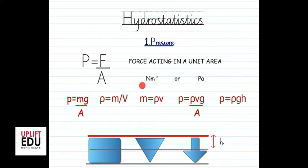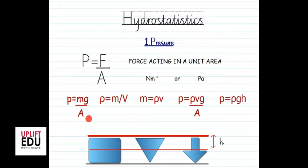We usually use Newton meters squared (N/m²) or Pascals to measure pressure. Newton meters squared is the SI unit of pressure.